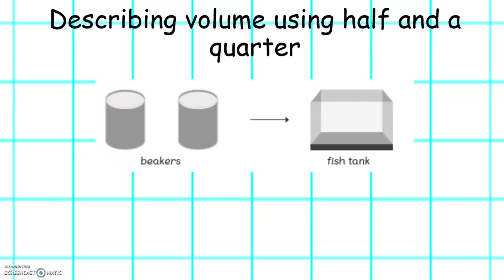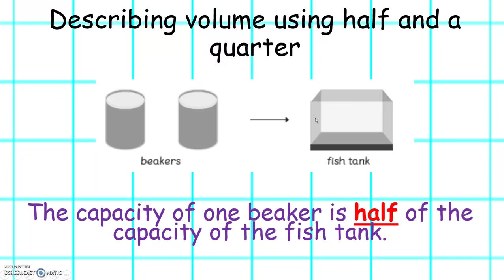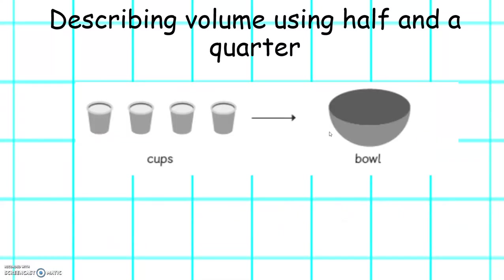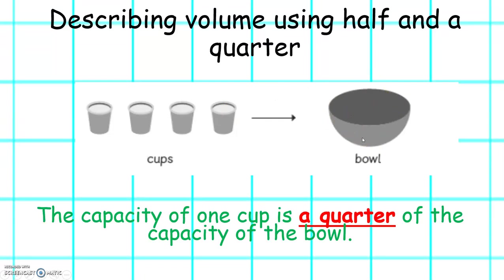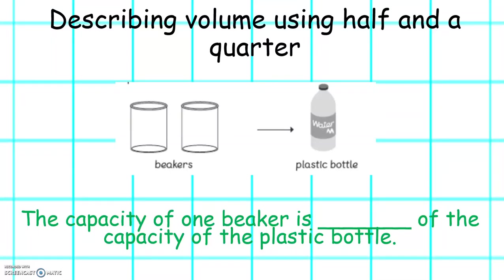Now let's look at the beakers and the fish tank. It takes two beakers to fill the fish tank, so the capacity of one beaker is half of the capacity of the fish tank. It takes four cups to fill one bowl, so the capacity of one cup is a quarter of the capacity of the bowl.